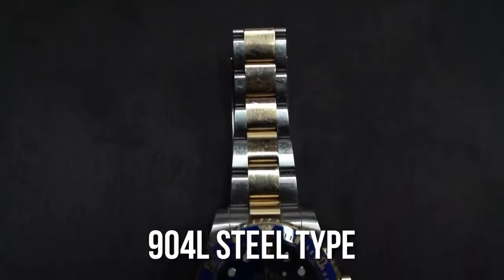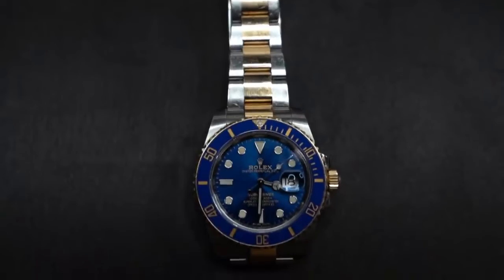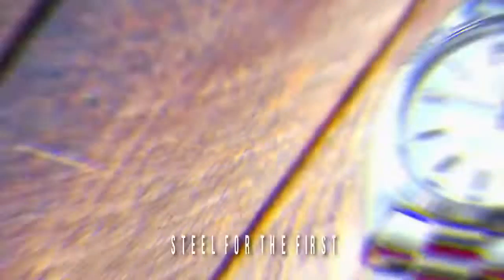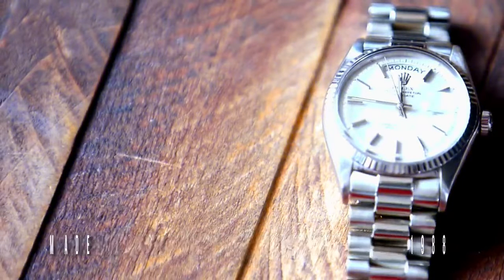Currently, all the steel that is used for Rolex watches is of the 904L steel type. So, what makes it special? While many brands continue to use the 316L type, Rolex had already launched watches made of 904L steel for the first time in 1988 with a few versions of the Sea-Dweller.